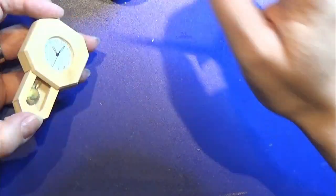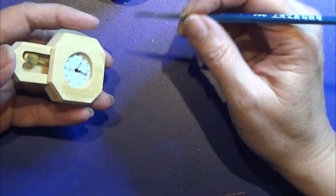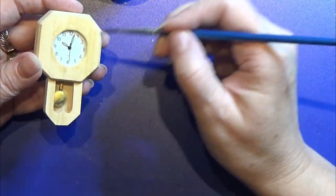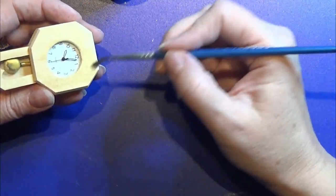I take my glaze and I'm glazing all the wood parts on this little clock. Be careful that you don't get the glaze on the plastic parts, because that would look really bad.